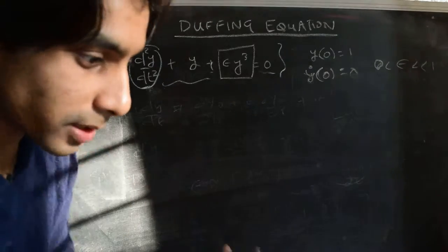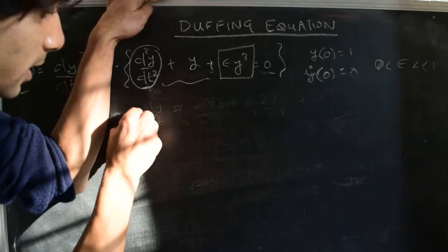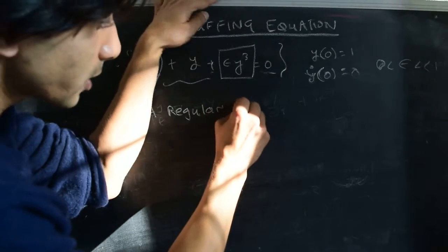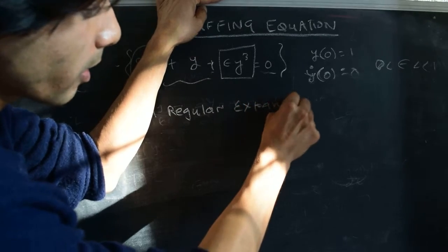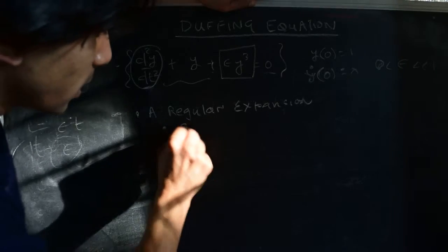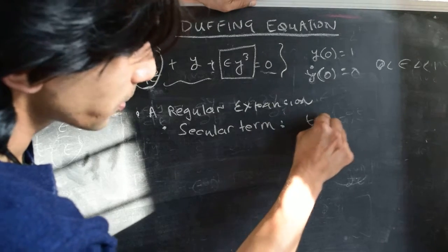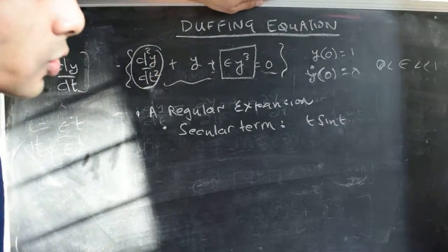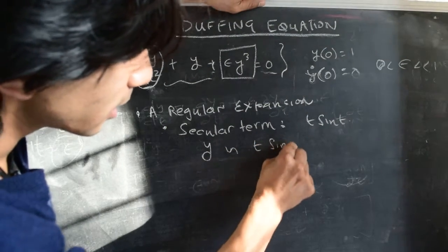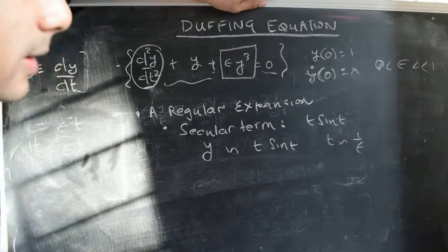As a reminder of what we did in the previous couple of videos on the Duffing equation: one of the things we saw is that a regular perturbation expansion gives rise to a secular term. This secular term is proportional to t times sine of t, so the expansion for y scales as t·sin(t) for large times t, in particular of the order of 1 over epsilon.